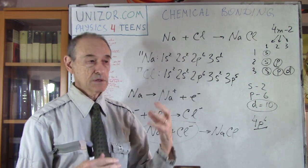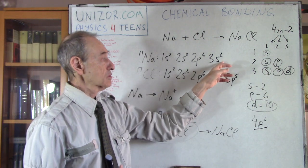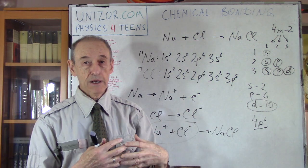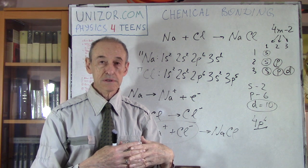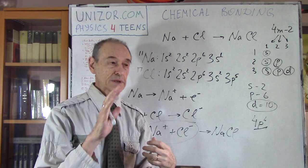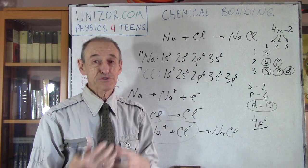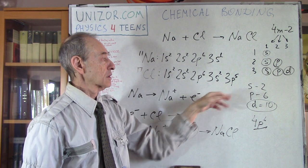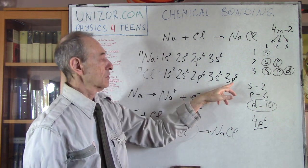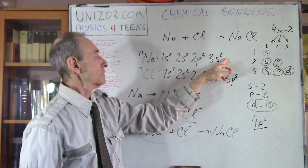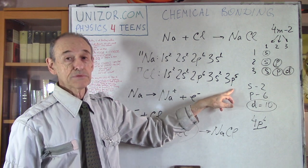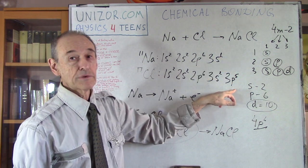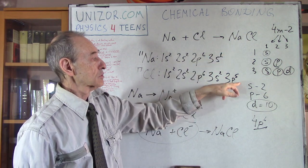Why does one electron go from sodium to chlorine and not five electrons from chlorine to sodium? Because it's much more difficult to rip off five electrons than one. So the natural transformation is one electron from sodium to chlorine. What we need is a proper fit between two different atoms to become chemically bonded.